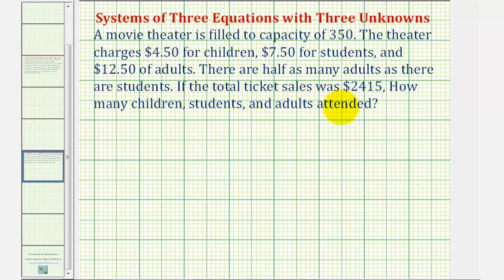Because we have three unknown quantities, we'll assign three variables. Let x equal the number of children, y equal the number of students, and z equal the number of adults.